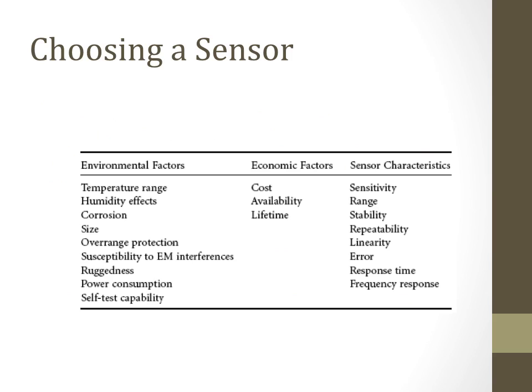When choosing a sensor, consider environmental factors such as temperature range, humidity, collision, and size. Economy factors include cost, availability, and lifetime. Key sensor characteristics include sensitivity, range, and stability. Range matters because for larger areas you need to deploy more sensors. You must also check repeatability — placing repeaters at certain intervals for better signal amplification.